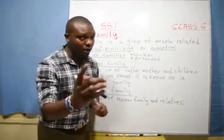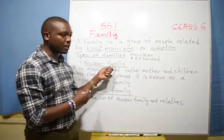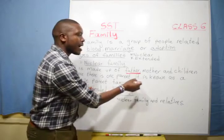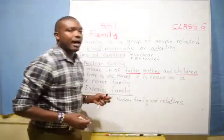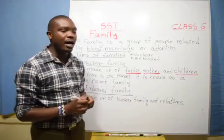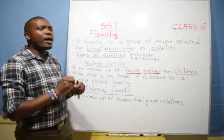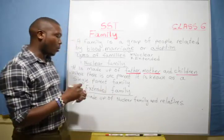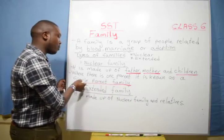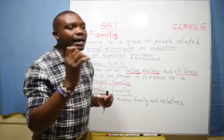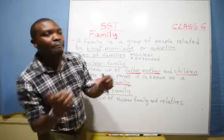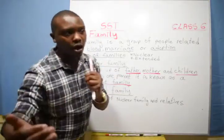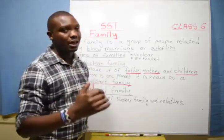We'll start with the first type of family, that is the nuclear family. The nuclear family is made up of father, mother, and children. Where we have only one parent in the family, this type of family is known as a single parent family. A single parent family is a family that has one parent. It can be either a mother or a father who is taking care of the children.